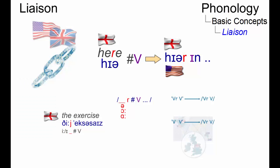Liaison is most generally defined as the smoothing out of syllable boundaries in speech by adding a phoneme that is not heard in isolation.